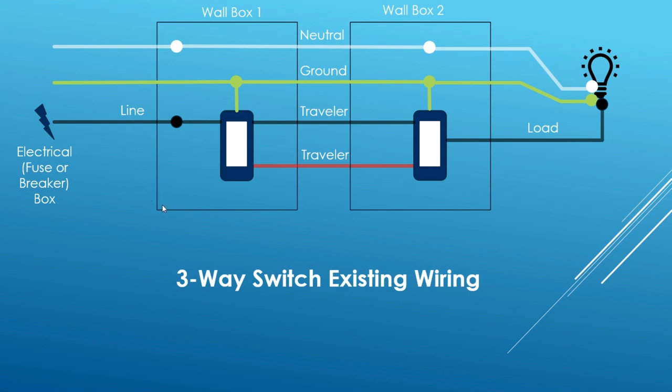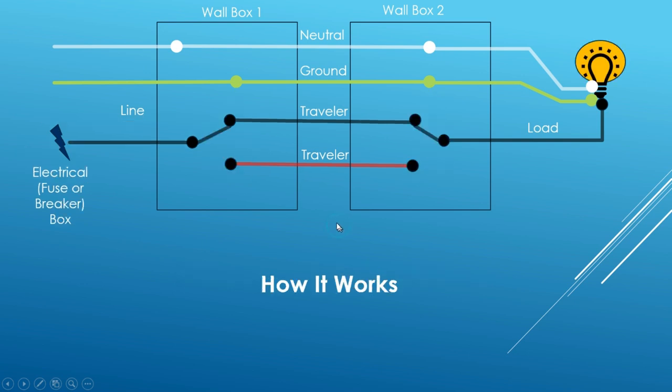What's happening is, in one switch box, you have power coming in from the circuit breaker. This is called the line voltage. The other two wires are, in essence, traveler wires. There's one black wire and one red wire. And in the other box, you'll have the same red and black wires and a single black wire going out for the load. Also in the box, you'll have a neutral wire and a ground wire. Looking at it from a mechanical perspective, you can see when both switches are in the same mechanical position, in this case being up, the power flows through the first switch across the black traveler wire and out through the black load wire.